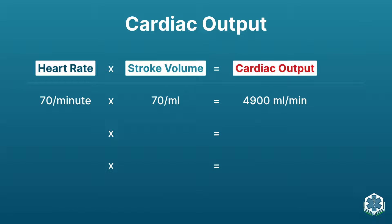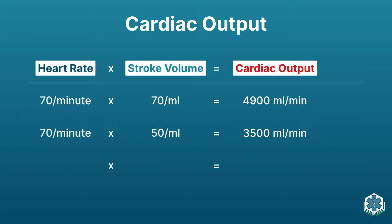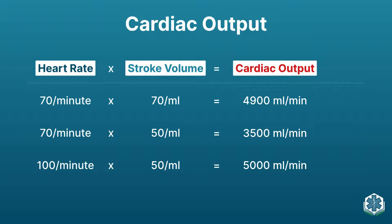Let's say I'm bleeding out from chest or belly trauma with arterial bleeding, and my volume is low. My stroke volume drops to only 50 mL, which means cardiac output drops to 3,500 mL per minute — not the five liters I want. So how does the body fix this? By increasing the heart rate — that's why we get tachycardia in shock. With 50 mL stroke volume and increased heart rate, we get back up to five liters a minute. That's how the body compensates.